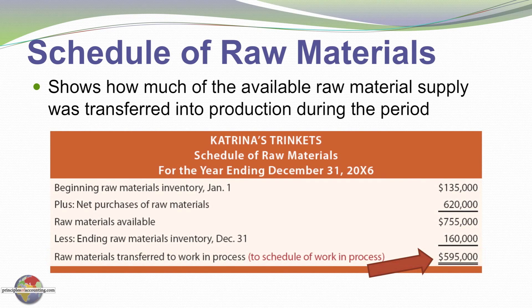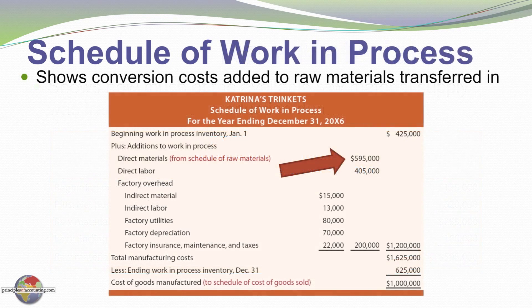Remember this number — $595,000 for Katrina's Trinkets — it is the result of these calculations. The goods transferred out of raw materials inventory also appear in the next schedule: an inventory schedule of calculations for work in process.